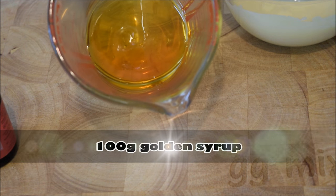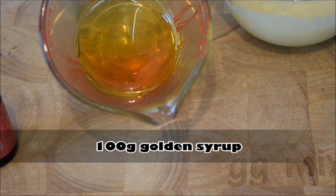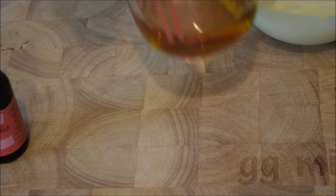As you can see my golden syrup is quite thick. So to loosen it up a bit I'm going to heat it in the microwave for 20 seconds.